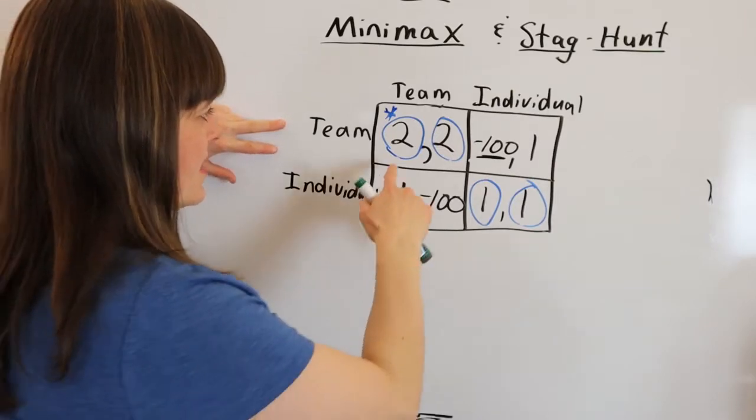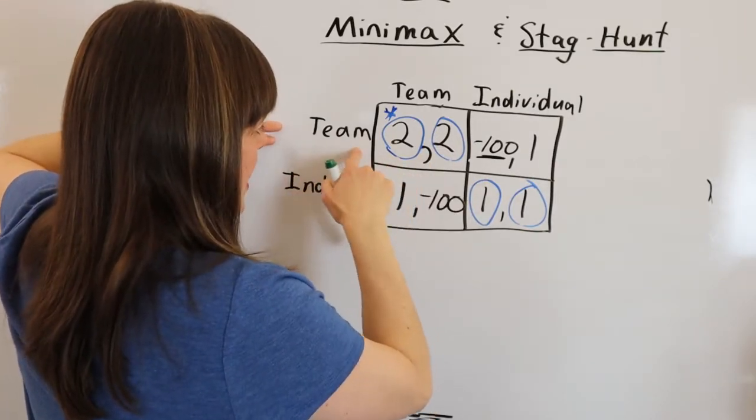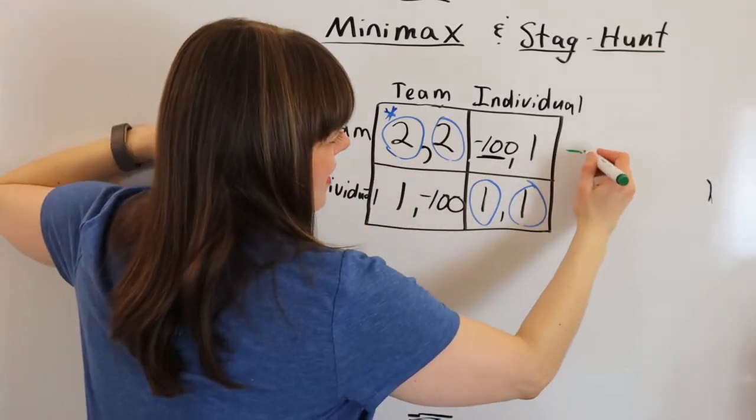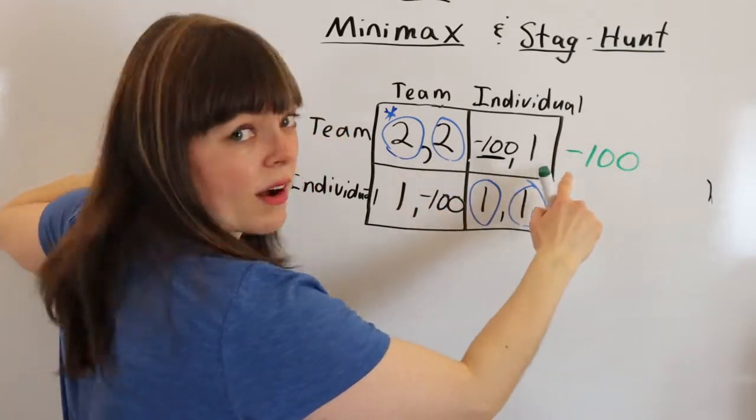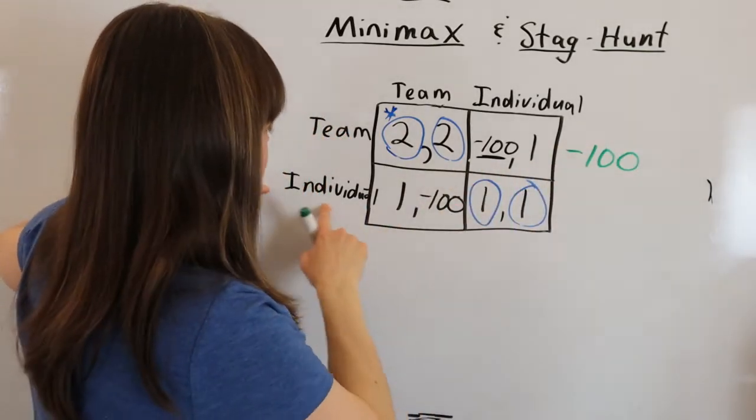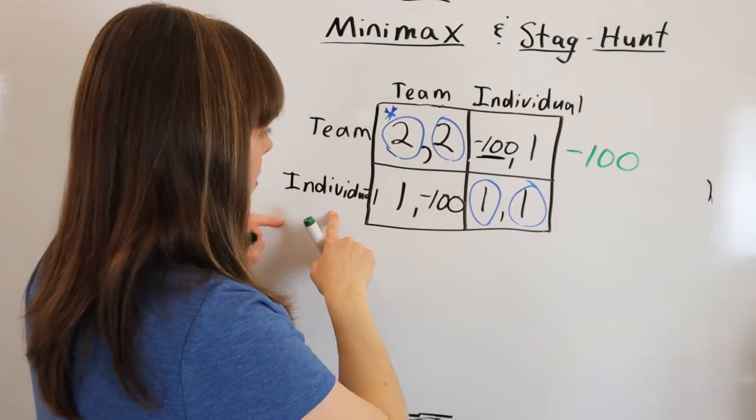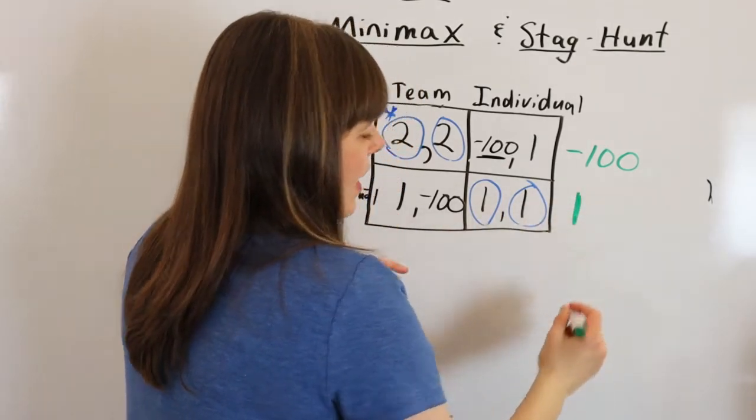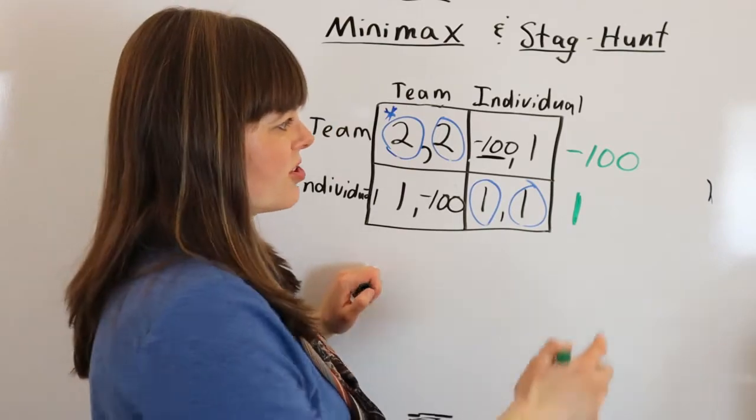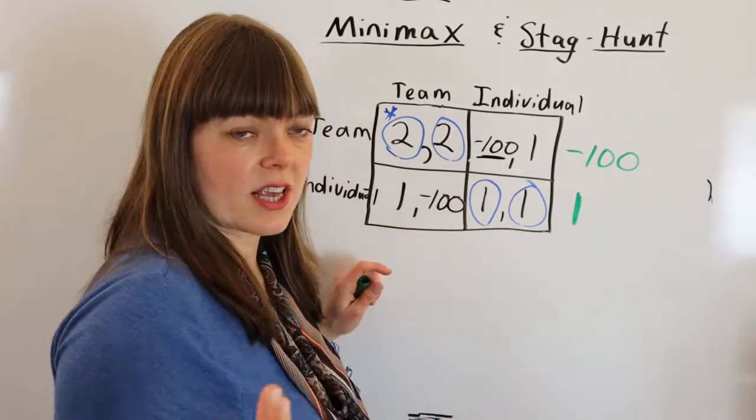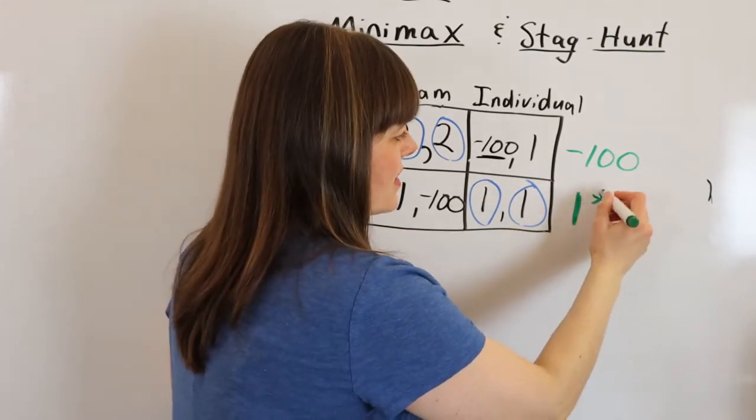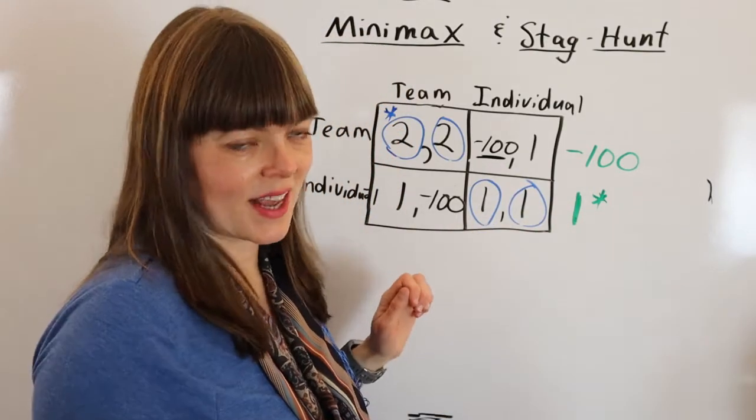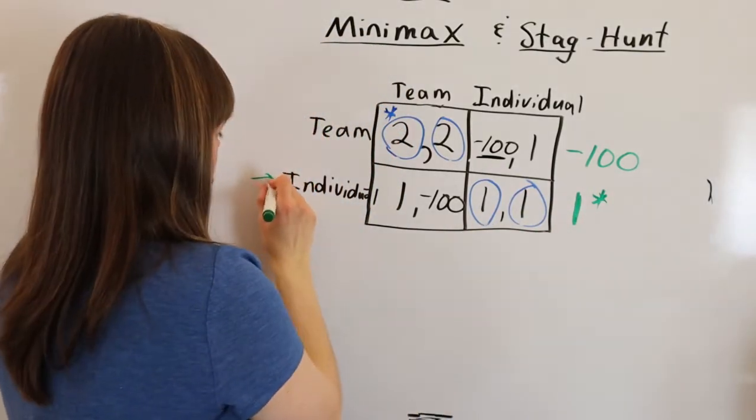So player one can look at these options and say, if I choose team, the worst that could happen is I'd get negative 100. If I chose the individual problem, the worst that could happen is that I would get one. And in this case, the Minimax thinker is going to just look at those two, what are the worst case scenarios and say, this is the least bad worst case scenario. So I'm going to choose individual.